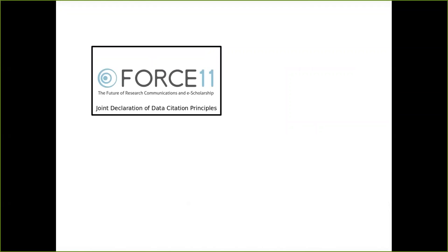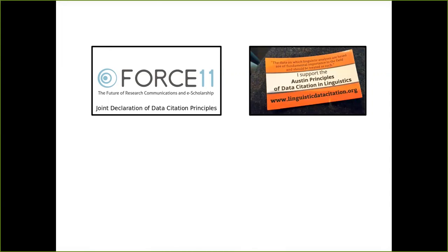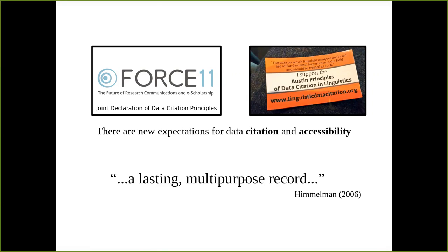New initiatives like the Force 11 Joint Declaration of Data Citation Principles and the Austin Principles stipulate that we need to do better to make our data citable and accessible. This is primarily because reproducible scholarship is valued higher than unreproducible scholarship. For those interested in language documentation, data accessibility and citation also supports efforts to create repositories of language data that are persistent and accessible to a wide variety of users, including members of speaker communities and others working outside the discipline of linguistics.